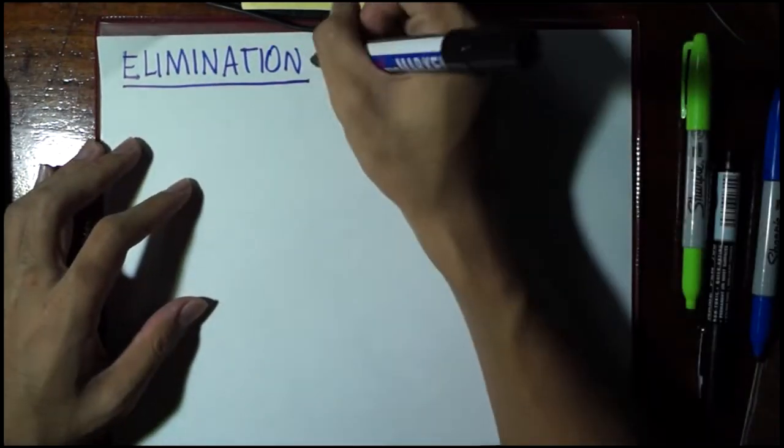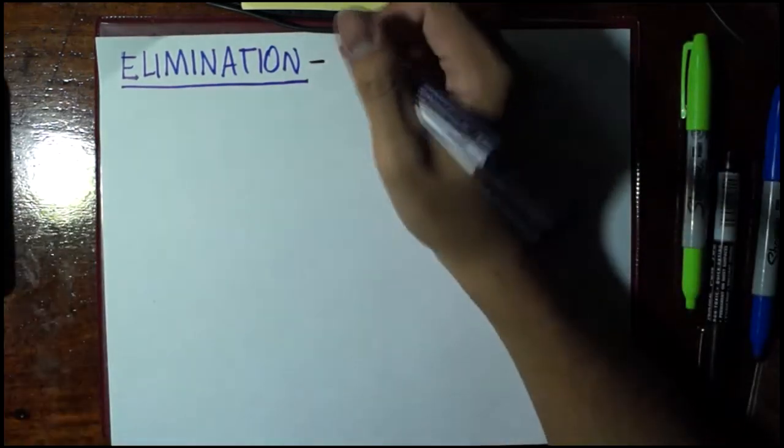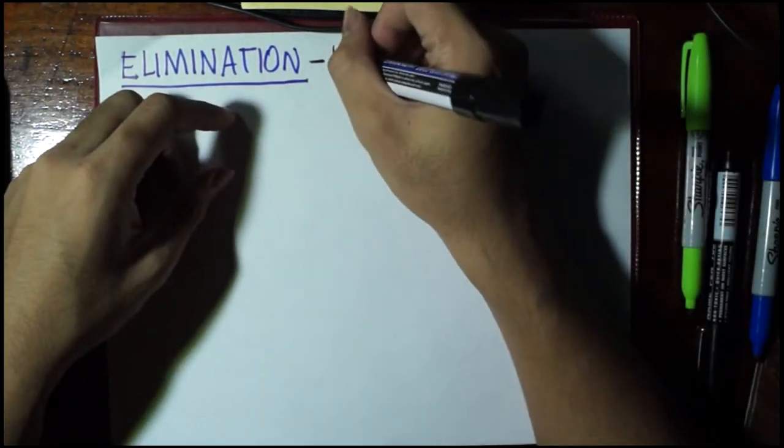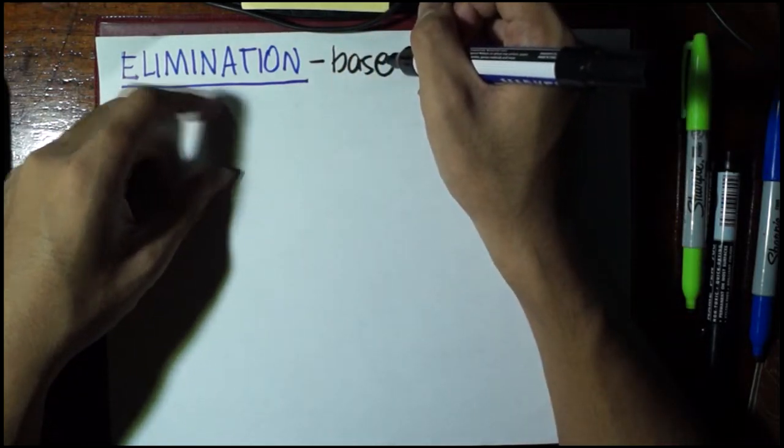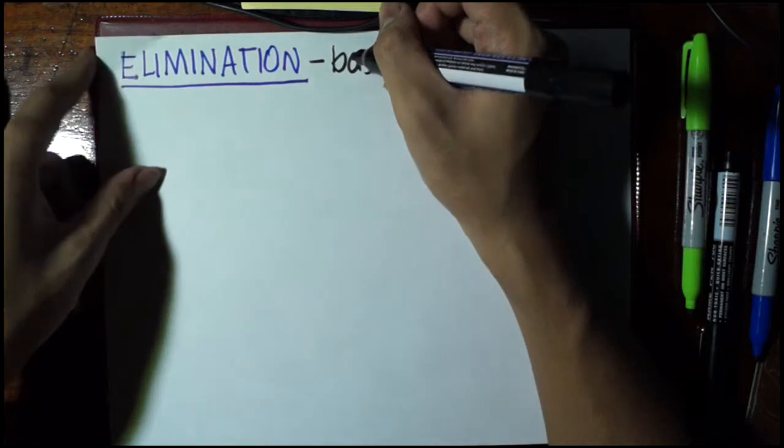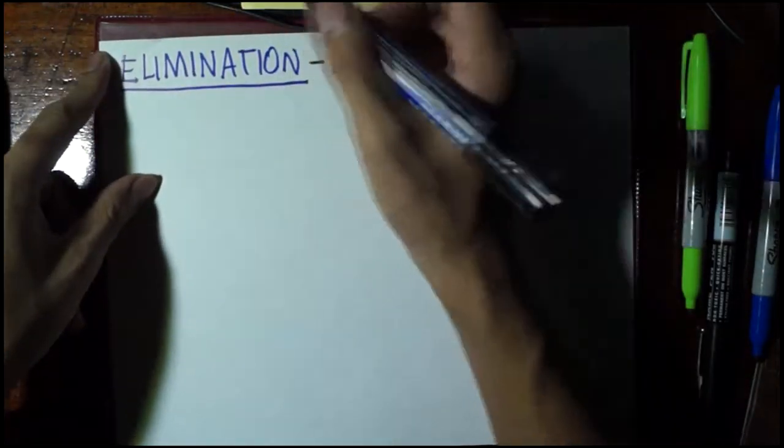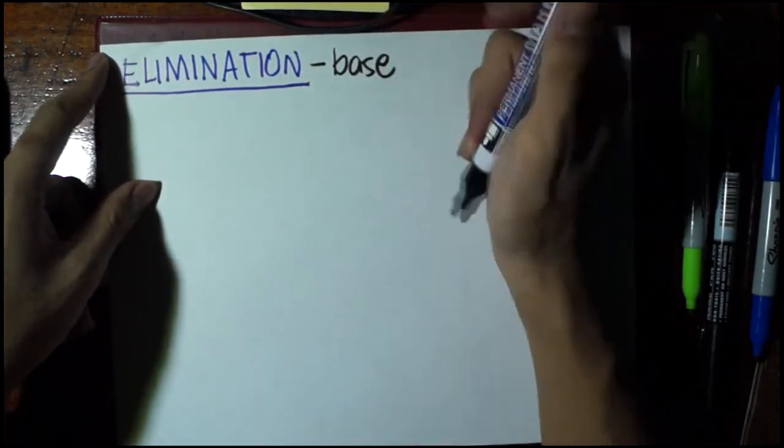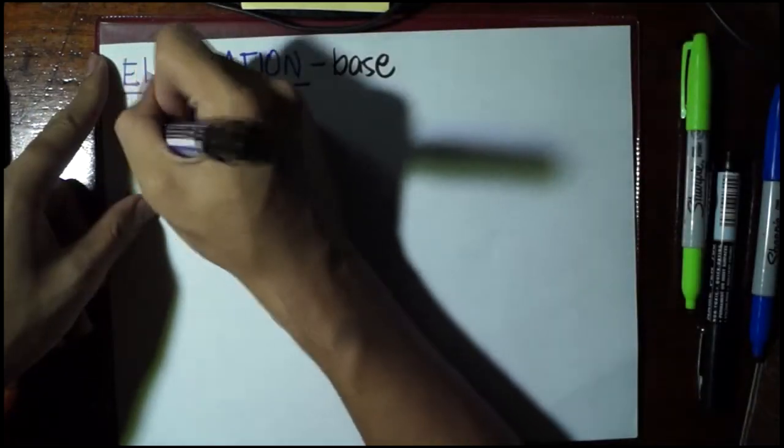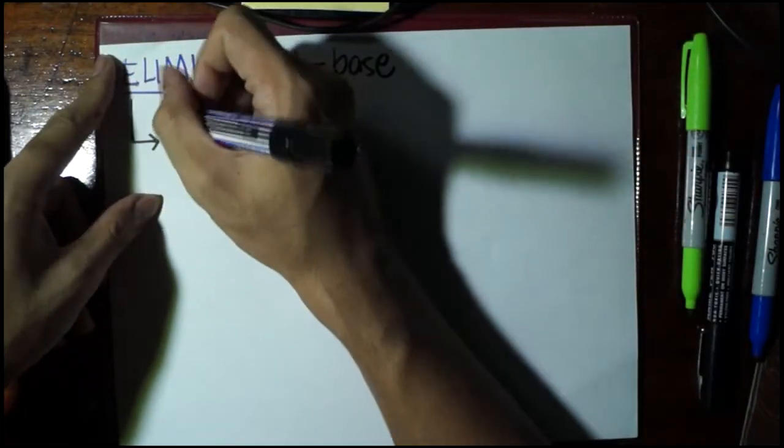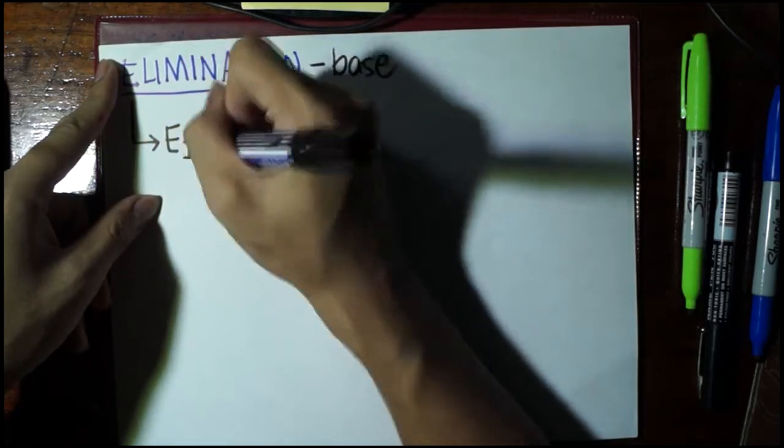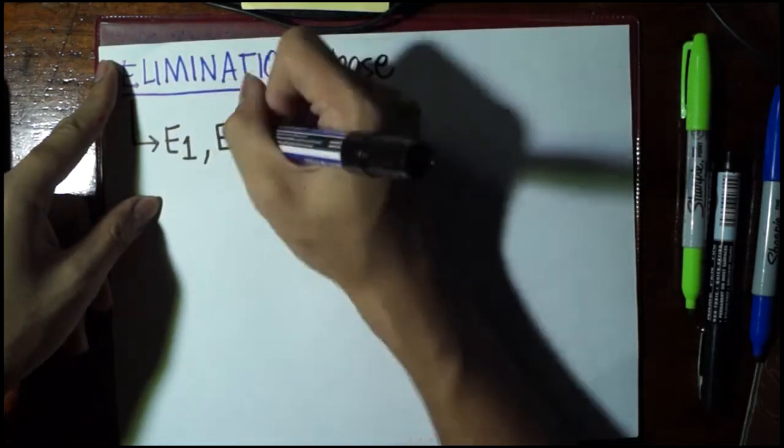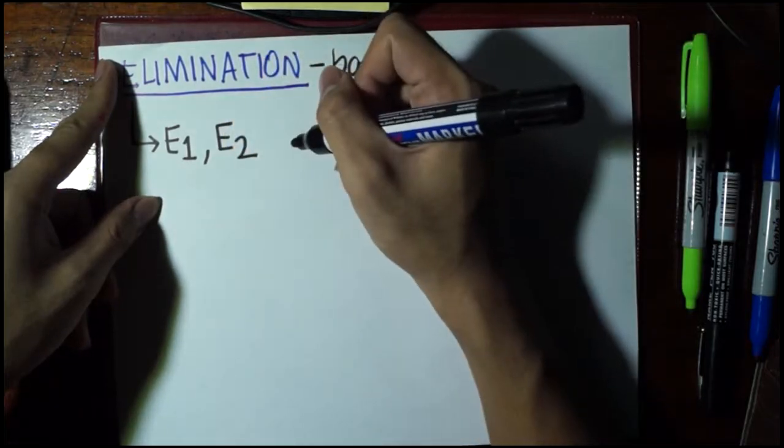In elimination, instead of a nucleophile, the reagent that we're going to use for the reaction is a base. This base would be able to swipe away a hydrogen from the beta carbon, that's why this is called beta elimination. Just like in nucleophilic substitution, there are two types based on molecularity: E1 and E2.